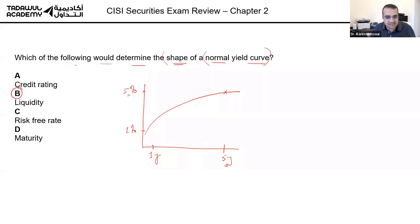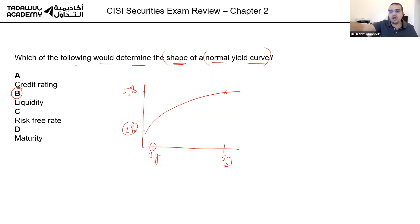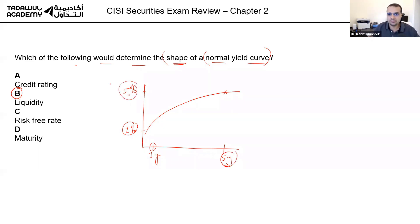The shape of a normal yield curve is determined by the investor's liquidity preference. If an investor is only willing to accept a short-term bond, they will accept a smaller yield. If the liquidity preference is for a longer term, they will ask for a higher yield.